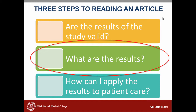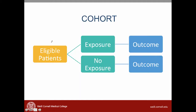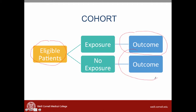What are the results? Let's revisit the study design of a cohort study. In cohorts we take a group of patients who may or may not have been exposed to something harmful, then look to see whether there is a correlation between their outcomes and the exposure. In this case the exposure is antipsychotic medications and the outcome is acute kidney injury.